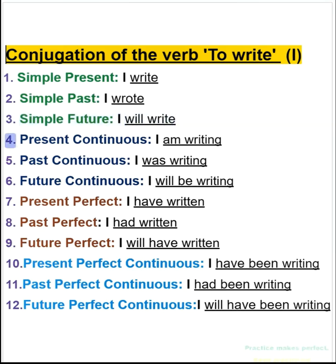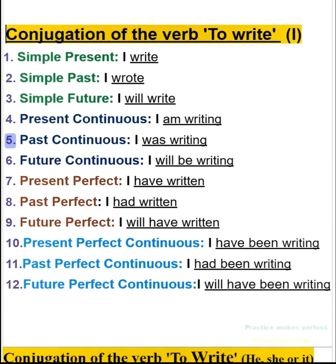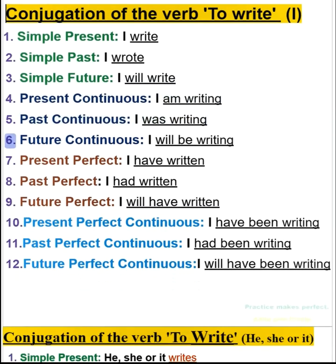4. Present continuous: I am writing. 5. Past continuous: I was writing. 6. Future continuous: I will be writing.